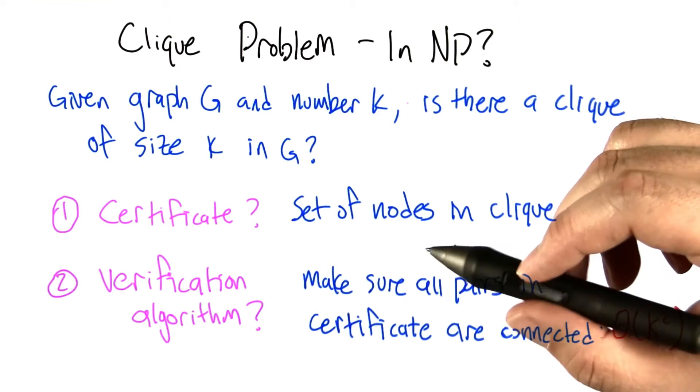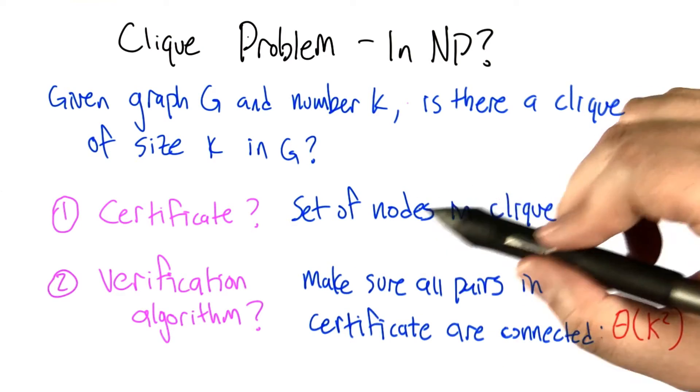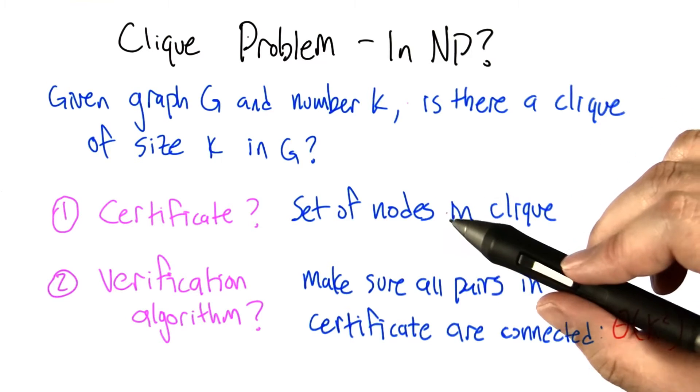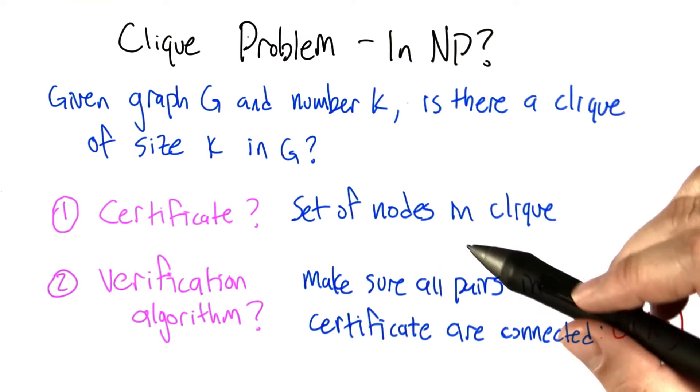The verification algorithm, then, is you go through all the pairs of nodes in the certificate and make sure that in the original graph G, they're actually connected.